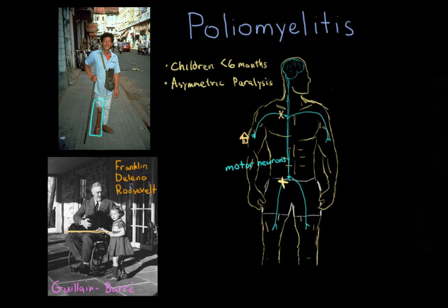So how does polio infect a person, most likely a child under six months? The virus enters through the mouth and starts replicating in the throat, increasing in number. It can also travel down into the stomach and intestines, replicating there as well. Once the poliovirus has increased in number, somehow — and we're not 100% sure how — it gets into the central nervous system and into the spinal cord, where it can damage the motor neurons that provide energy to the muscles.